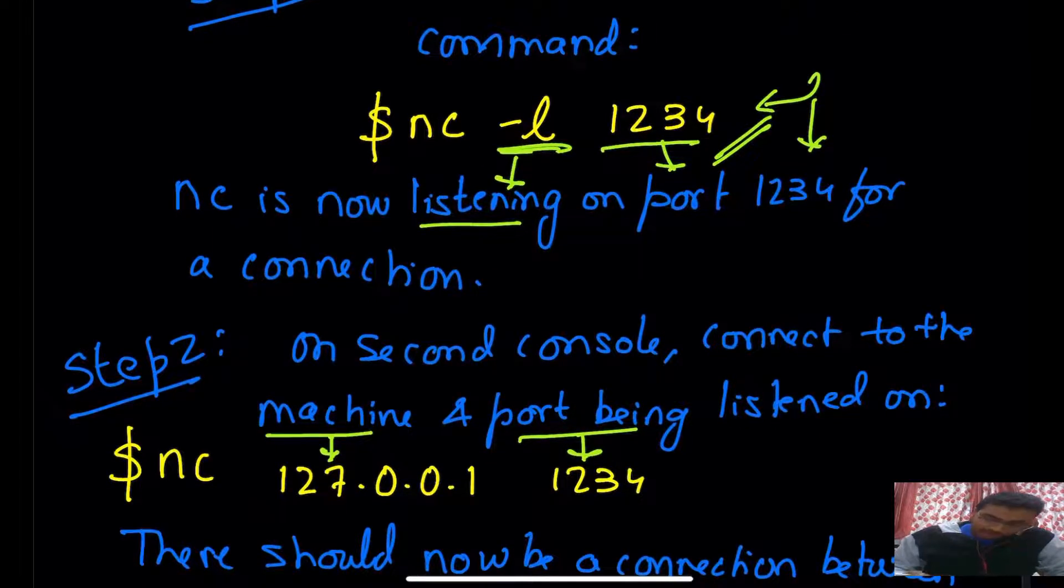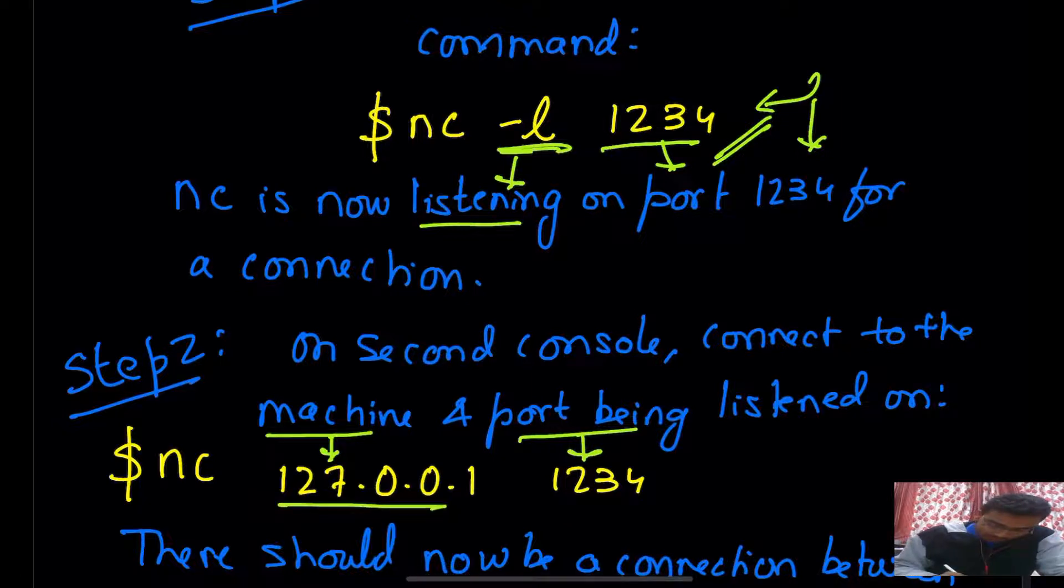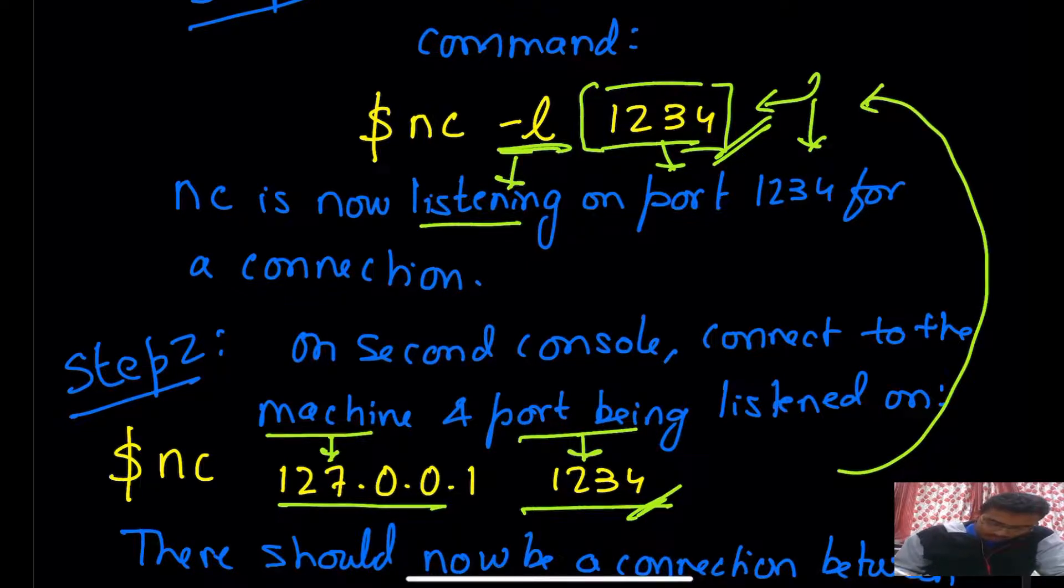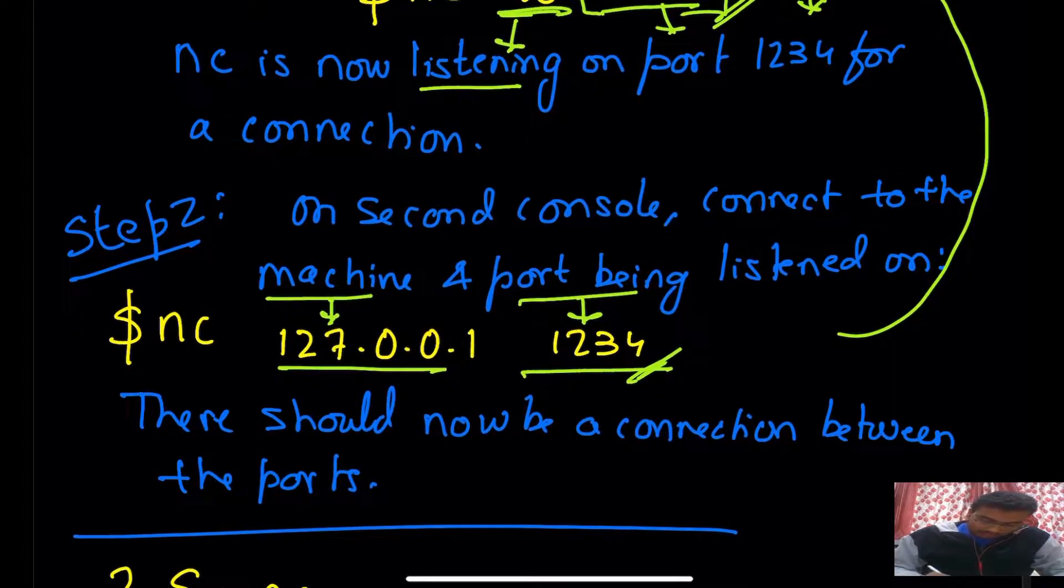Step two: on the second console or on a second machine, you can connect to the first machine by using the machine IP address and port number that is listened from. This is being listened on, that we used previously. Same port number you will use here. And now this machine or console will be able to make contact with our previous console. There should now be a connection between the different ports.